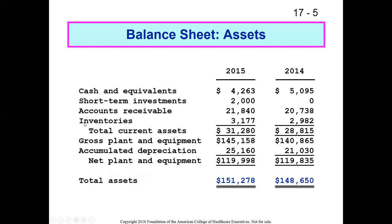You have gross PPE, which is all the physical stuff the organization owns lasting more than a year. Then you have accumulated depreciation, which we've discussed in a previous lecture. Netting those together gives you net PPE. You could also have long-term investments and other items. This is a very simple balance sheet. Adding everything up gives the organization's total assets.